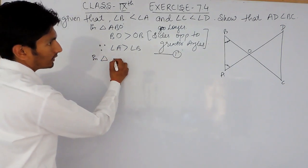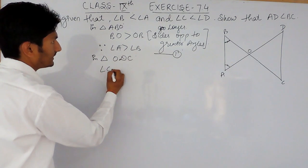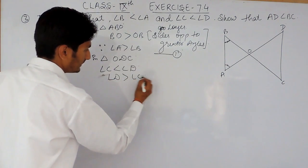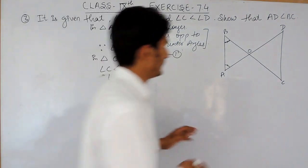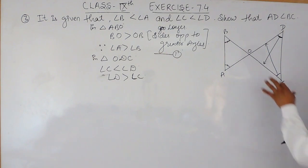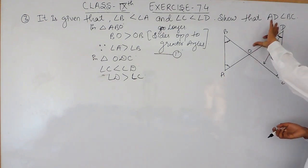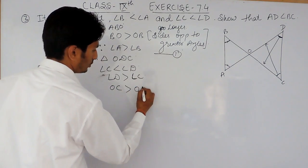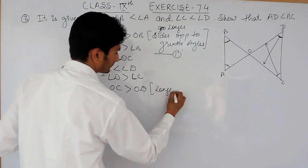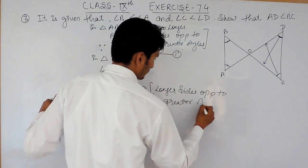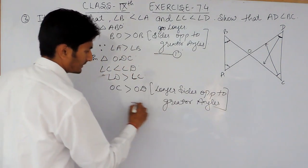Similarly, in triangle ODC, it is given that angle C is less than angle D, or we can say angle D is greater than angle C. So the side opposite to the greater angle D will be longer than the side opposite to the smaller angle C. We can confirm that OC will be greater than OD. This is again the longer side opposite to the greater angle, and this is our second equation.